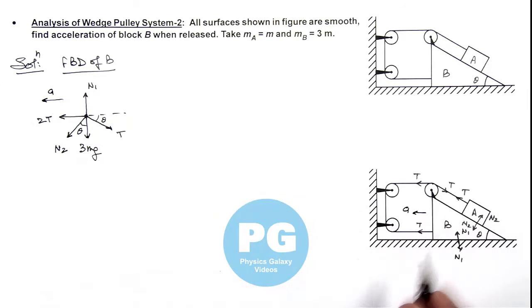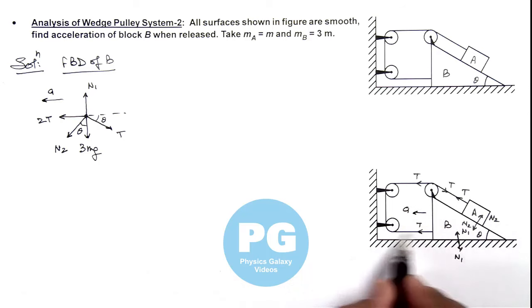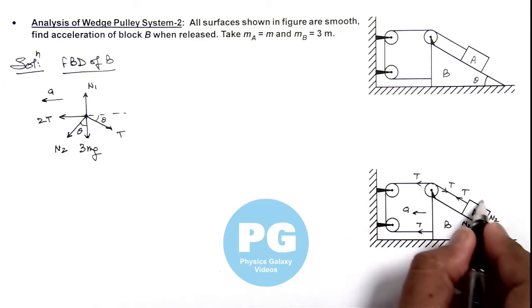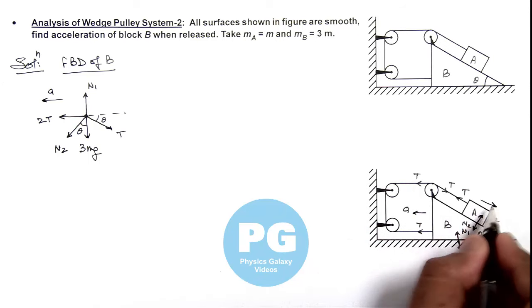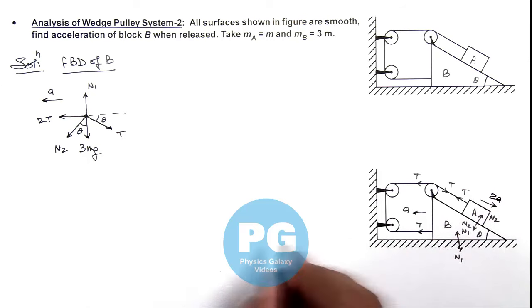By observation, if block B is moving toward the left with acceleration ay, the string length will reduce by double the length, so block A will move relative to block B with an acceleration of 2ay.